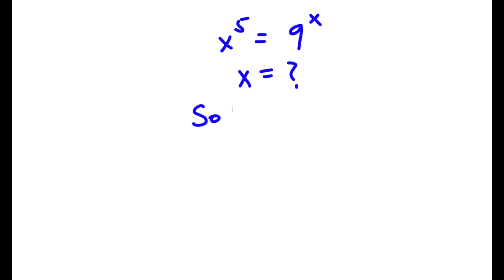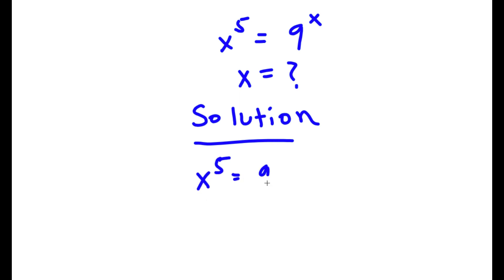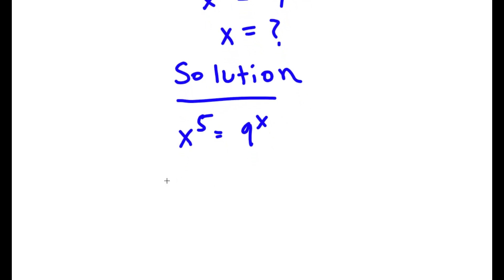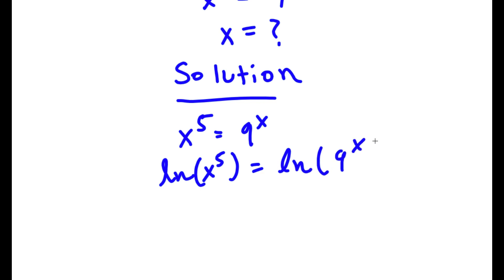Alright, so to solve this problem — x to the power of 5 is equal to 9 to the power of x — what we are first going to do is take the natural log on both sides, which is also known as ln. So if I take ln on both sides, we get ln x to the power of 5 is equal to ln 9 to the power of x.